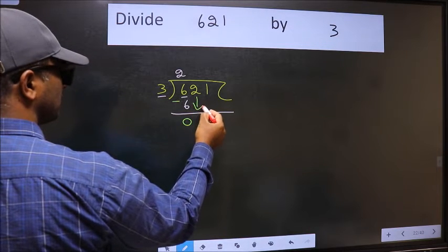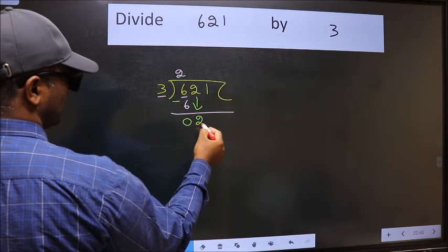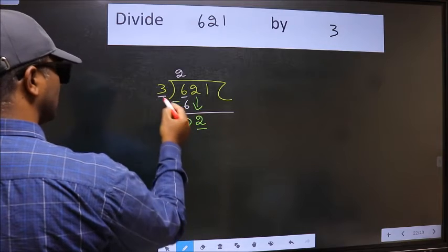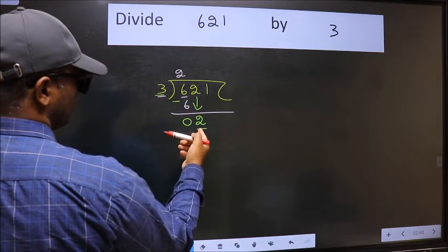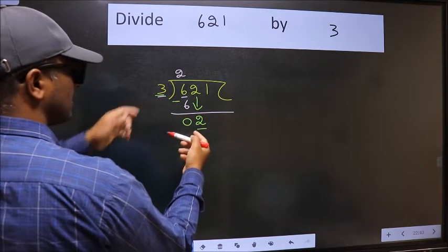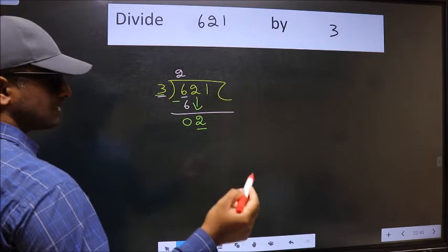After this, bring down the next number. So 2 down. Now here we have 2 and here 3. 2 is smaller than 3, so we should bring down the second number.